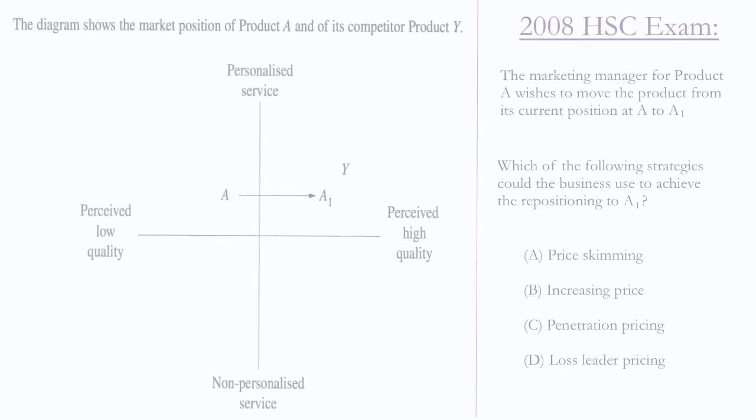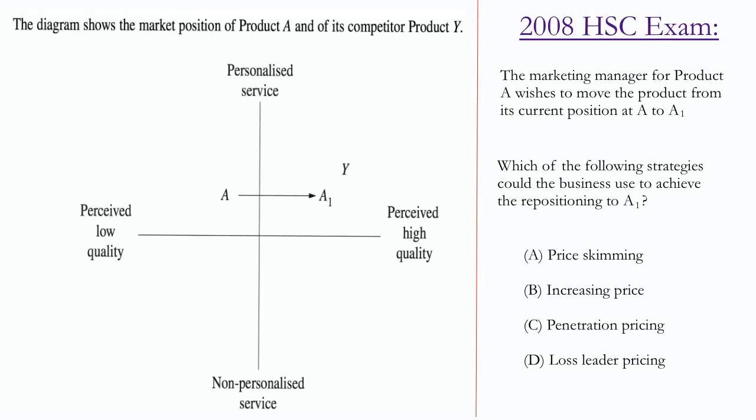Let's move on to HSC 2008 question 10. There's quite a lot of content to take in here, so let's break it down. The question reads: The marketing manager of product A wishes to move the product from its current position at A to A1. Which of the following strategies could the business use to achieve the repositioning to A1? The diagram given to us has personalized service and non-personalized service on one side, and perceived low quality and perceived high quality on the other side, so it's a scale of 0 to 10 pretty much on each.